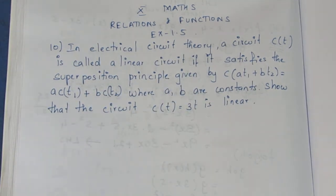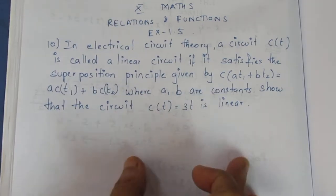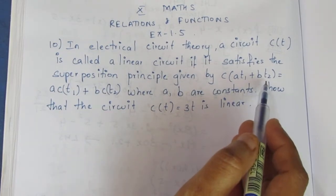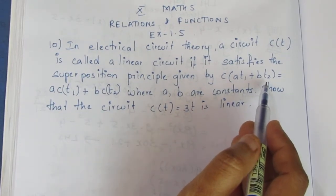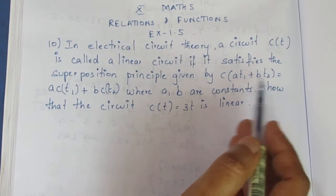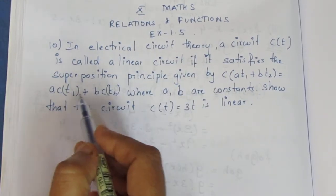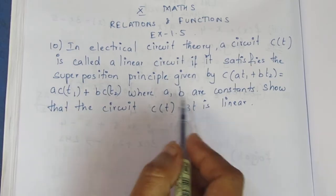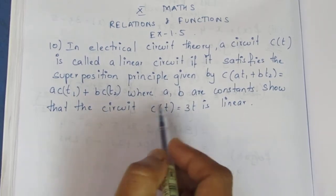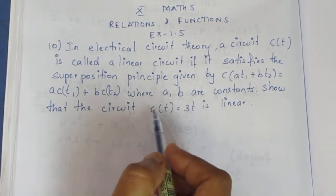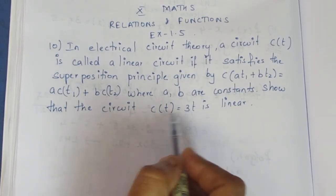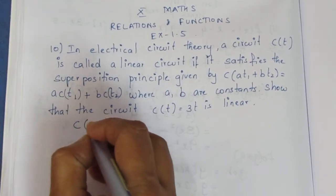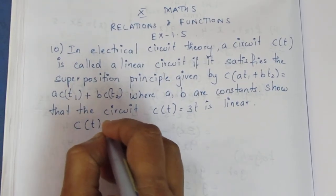To prove this is linear. Given that C of At1 plus Bt2 is equal to A·C(t1) plus B·C(t2). To prove with a linear equation, I am going to prove it. C of T is equal to 3t.